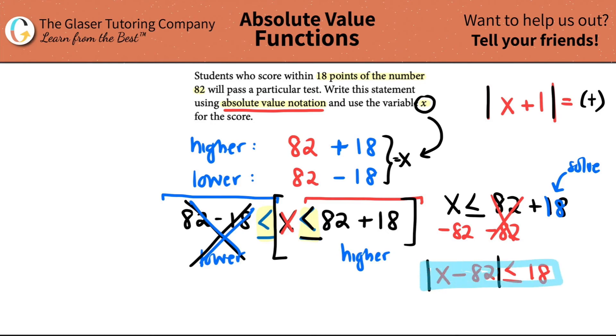So it's my score x minus 82. The absolute value just has to be equal to or 18. 18 is the greater number. And that is the answer.